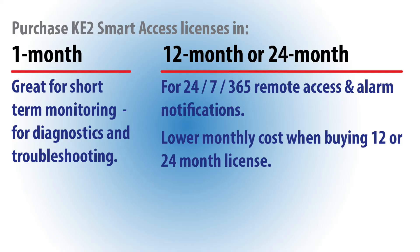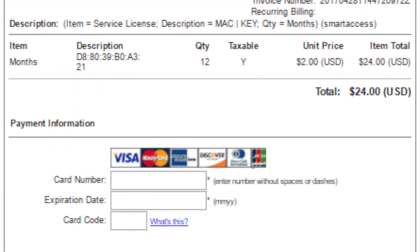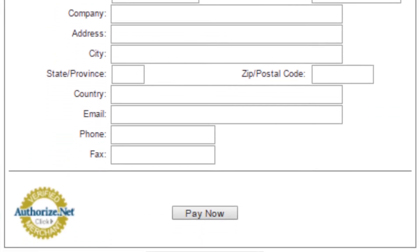Each controller is provided a 7-day trial, and you can purchase Keto Smart Access licenses in 1-month, 12-month, or 24-month increments. Just go to the licenses dropdown, then click buy. Fill in your credit card information, click pay now, and that's it.